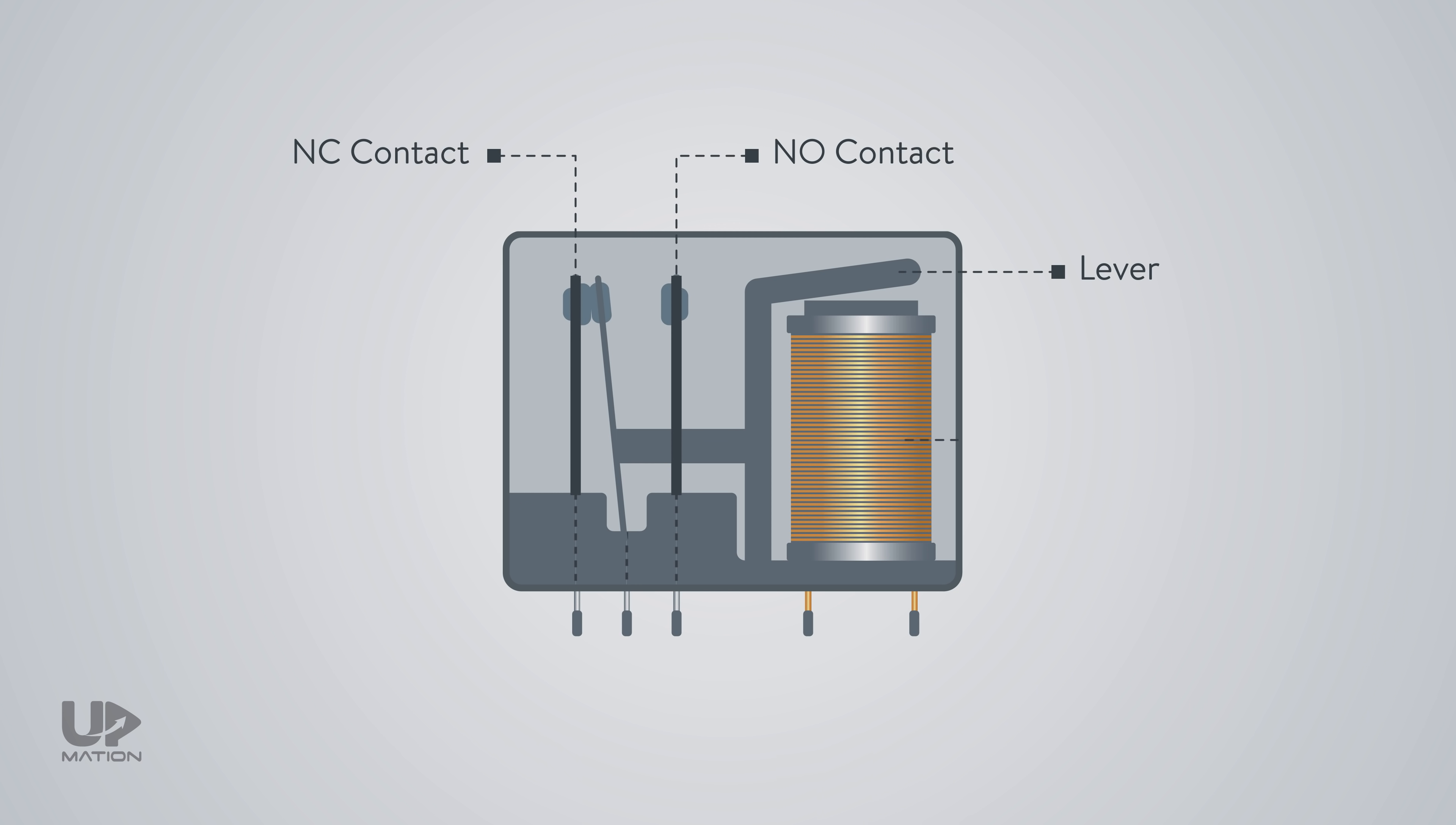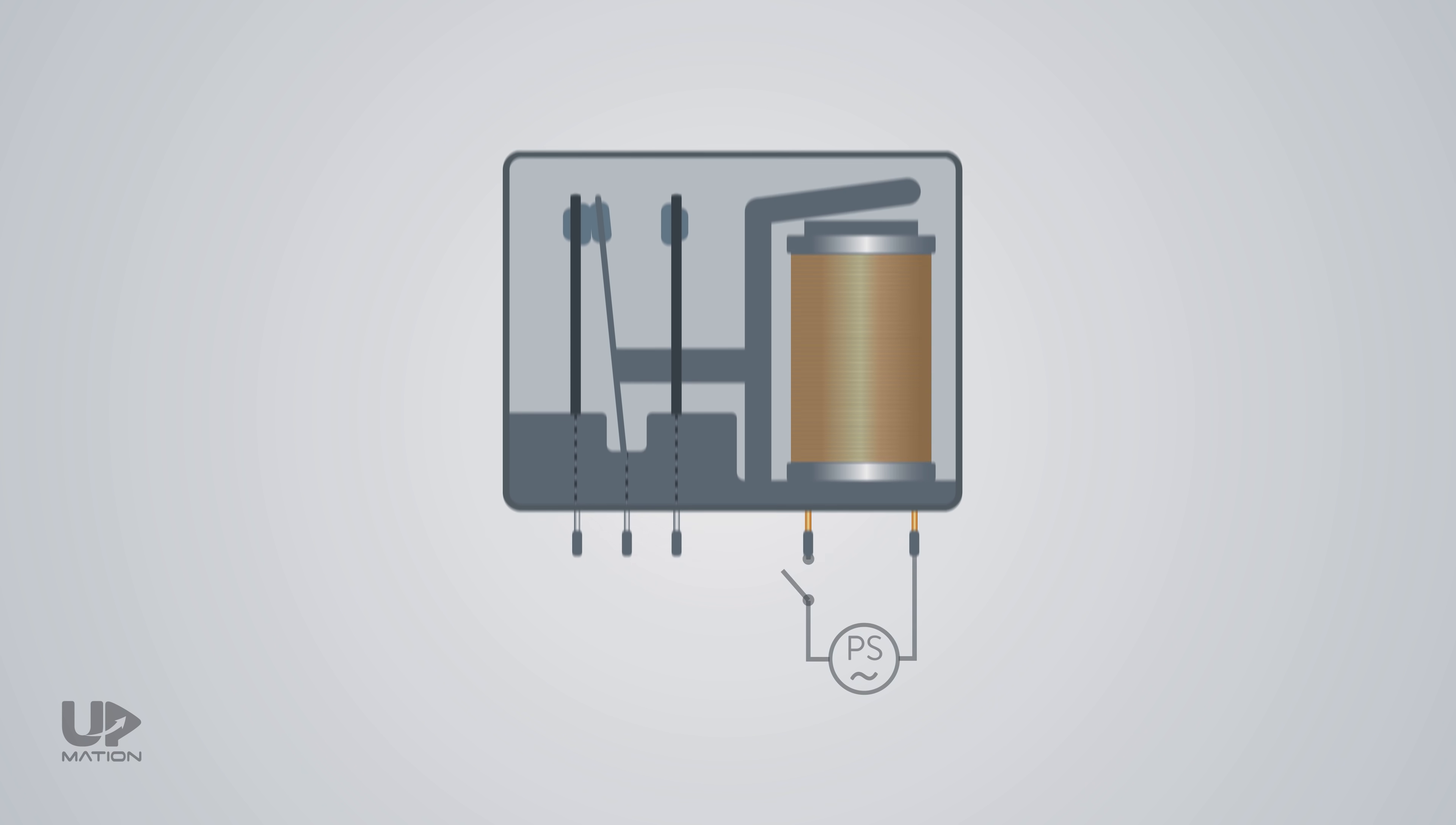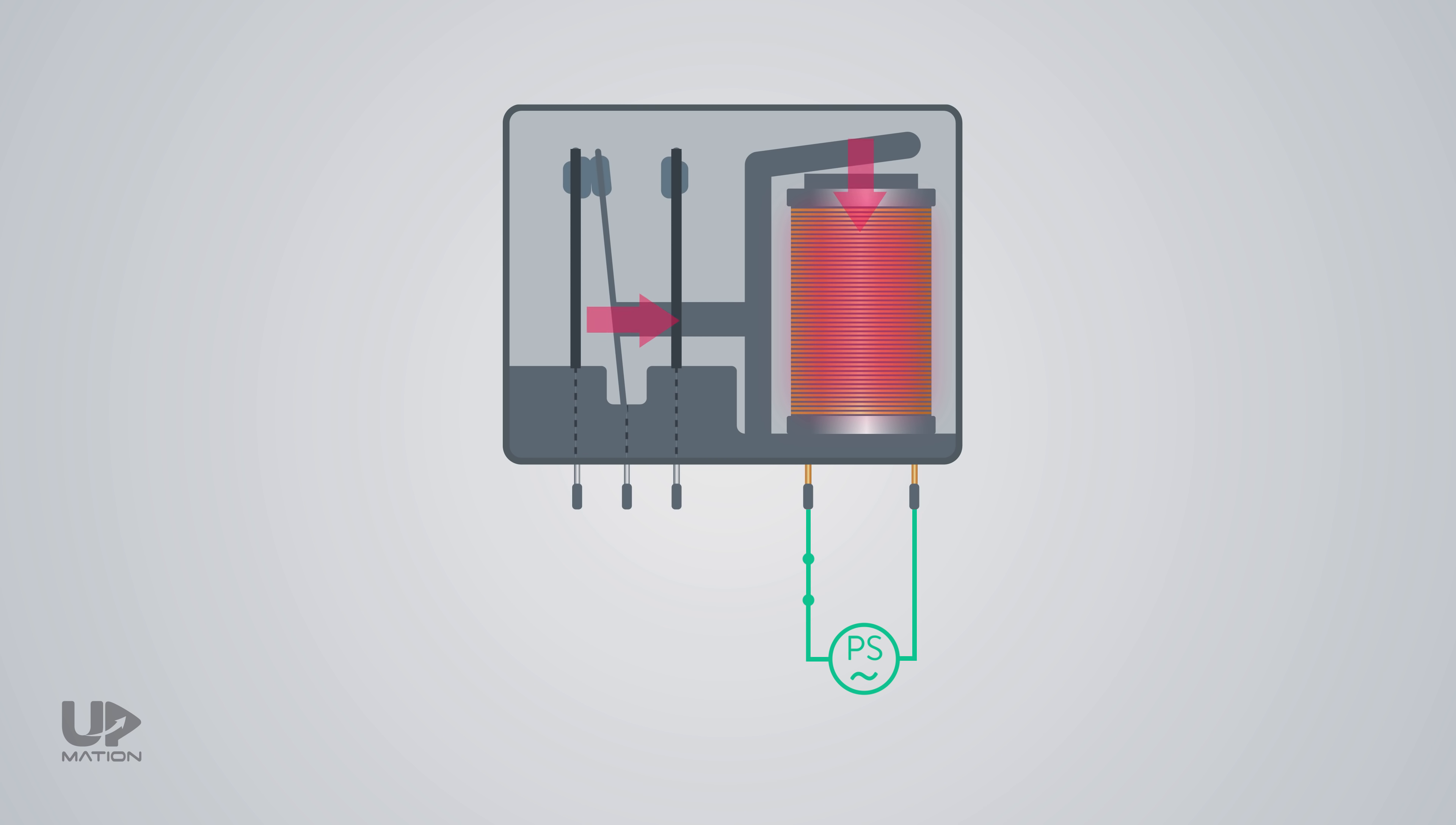This movement is made possible by an electromagnet. When we connect the power to the magnet, it attracts the lever and therefore, the NO and NC contacts change their normal or non-energized position. To know more about NO and NC contacts, watch our previous video from the link in the description. When the power gets disconnected from the coil, the lever and the contacts will get back to their initial position.